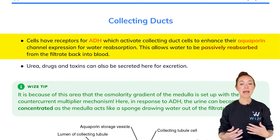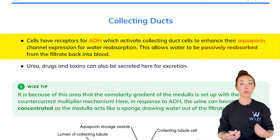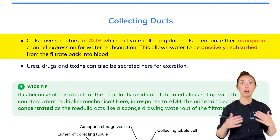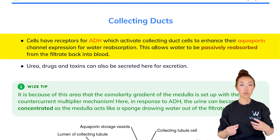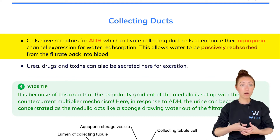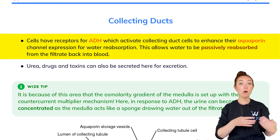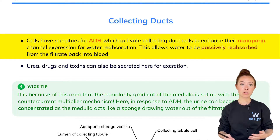ADH actually causes the cells of the collecting duct to produce more aquaporin — to actually synthesize more aquaporin channels — and those channels are what are used for water reabsorption. Aquaporins essentially just create a hole in the cell membrane that enables water to go through, and then water can move through by osmosis.